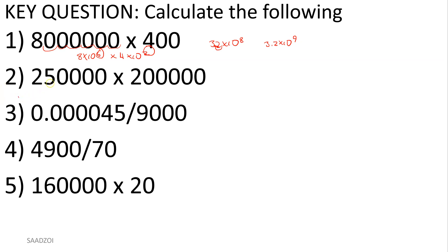Next multiplication: 2.5 times 10 to the fifth, times 2 times 10 to the fifth. Multiply the coefficients: 2 times 2.5 equals 5. Add the exponents: 5 and 5 gives you 10 to the tenth. There's your answer — 5 times 10 to the tenth. It's proper scientific notation because there's only one number to the left of the decimal.